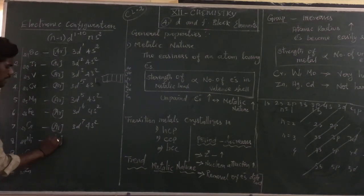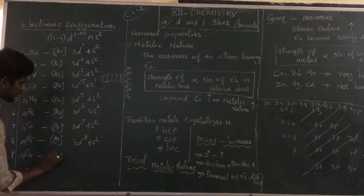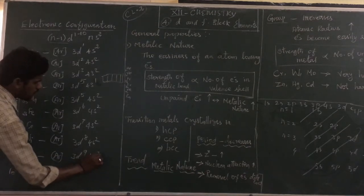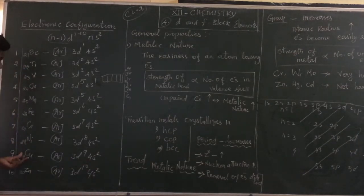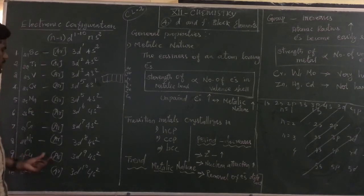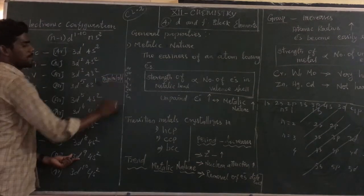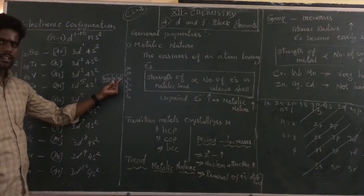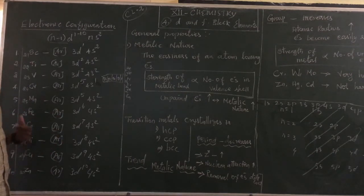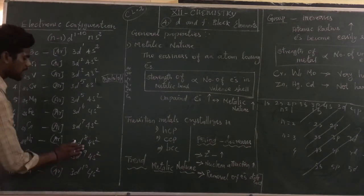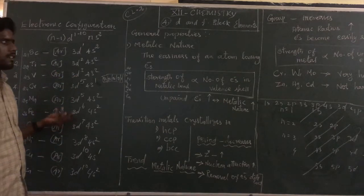Similarly, copper has an exceptional configuration. Instead of [Ar] 3d⁹ 4s², copper is [Ar] 3d¹⁰ 4s¹, because a completely filled d-orbital is highly stable. Each shell contains a pair of electrons. If there is one more electron added to reach a completely filled configuration, it is highly stable. Therefore, copper takes the configuration 3d¹⁰ 4s¹.